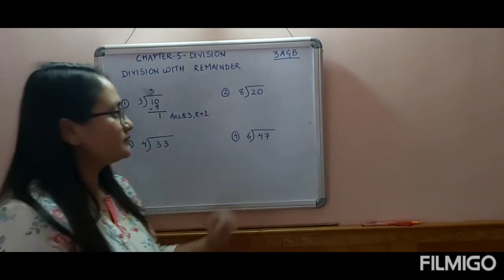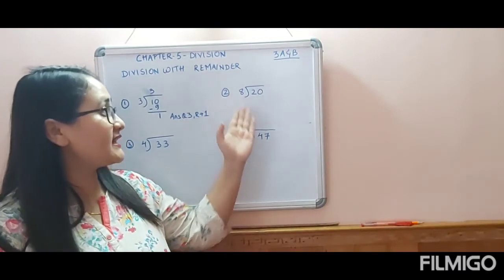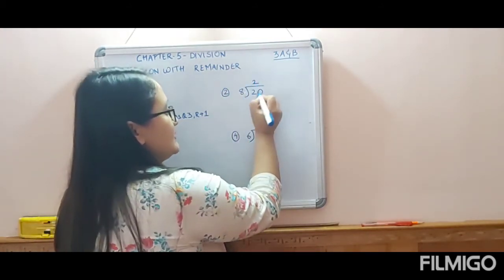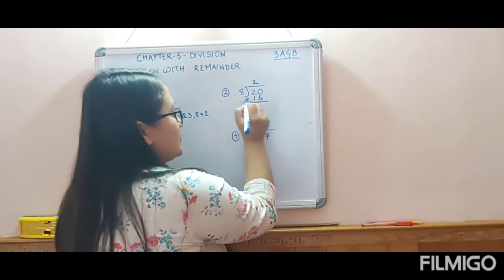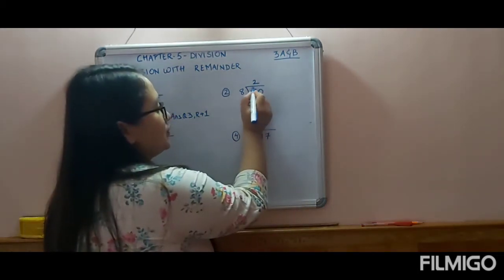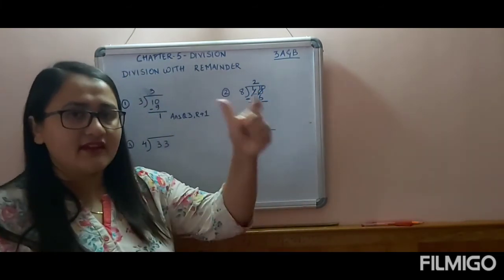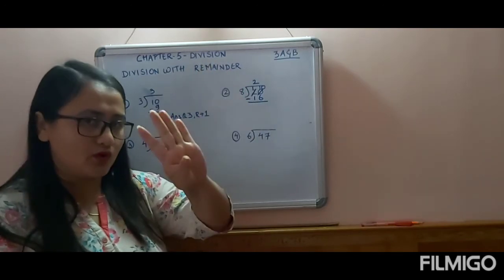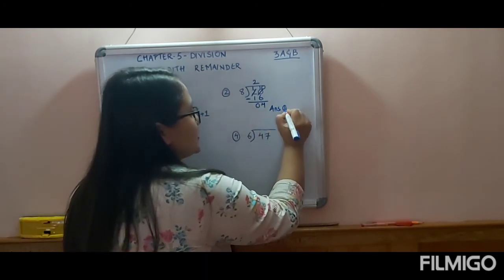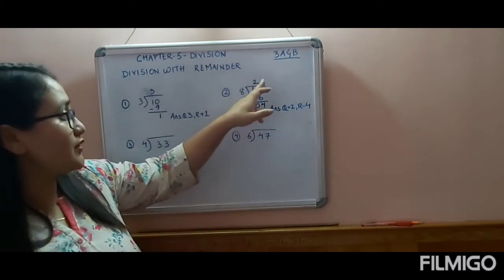Next sum: divide 20 by 8. Table of 8: 8 ones are 8, 8 twos are 16, 8 threes are 24 — that exceeds 20, so we write 8 twos are 16. We minus: we cannot subtract 0 from 6, so we borrow, making it 10. Counting after 6: 7, 8, 9, 10 — remainder is 4. Then 1 minus 1 is 0. Quotient is 2 and remainder is 4.